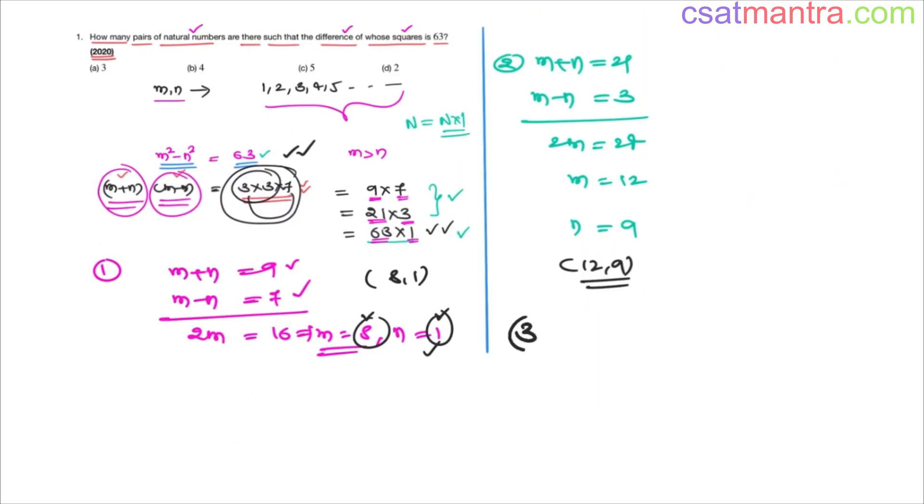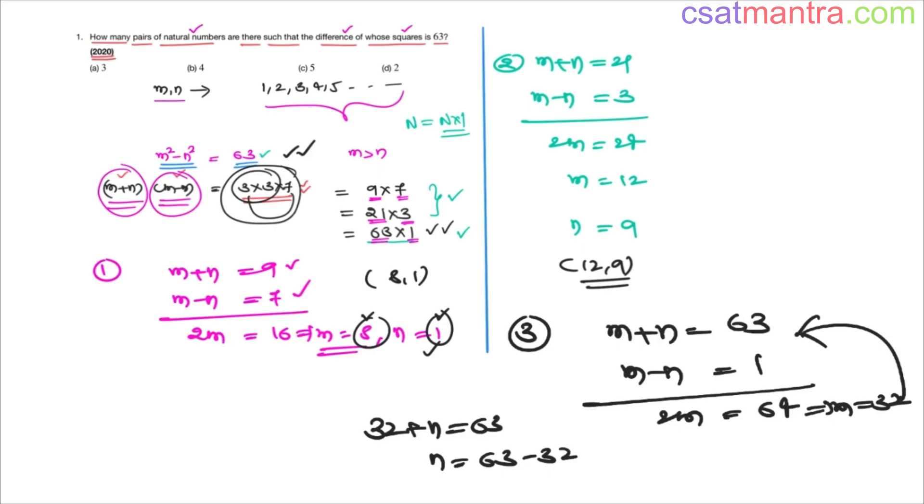Now third case, m plus n equals 63, m minus n equals 1. 2m equals 64, m equals 32. Substituting this in this equation, 32 plus n equals 63, n equals 63 minus 32, that is 31. So 32 comma 31, another possibility.